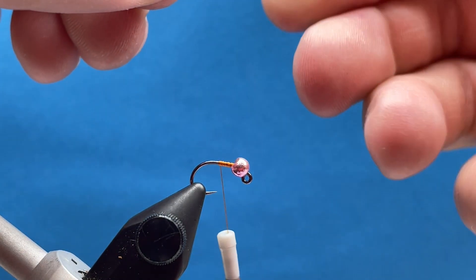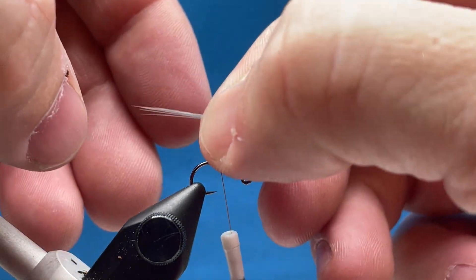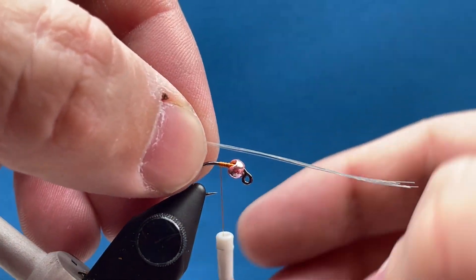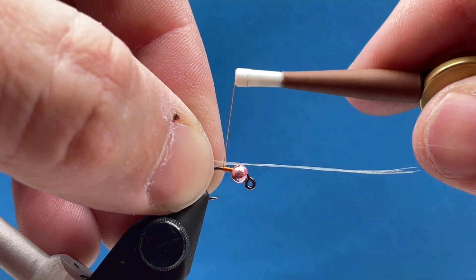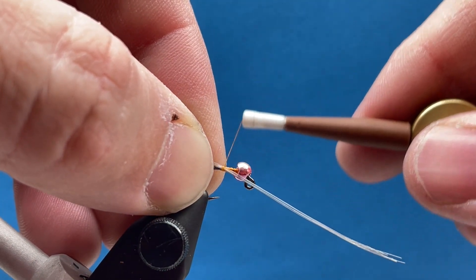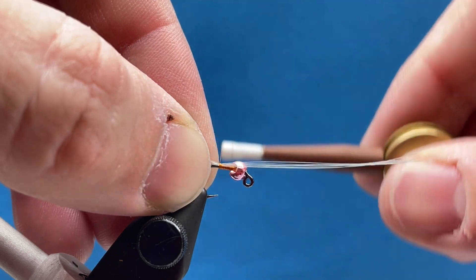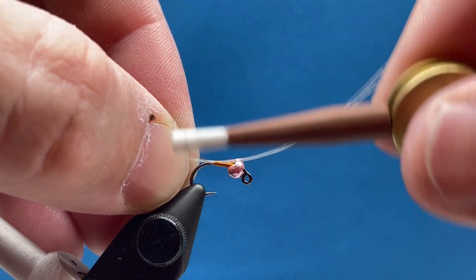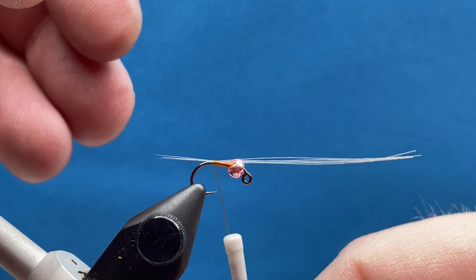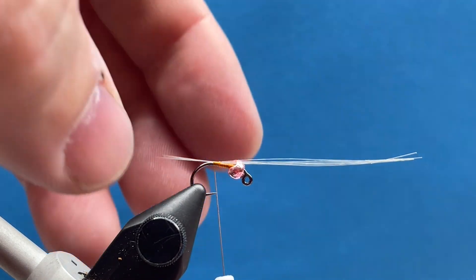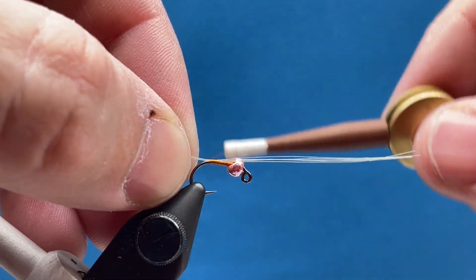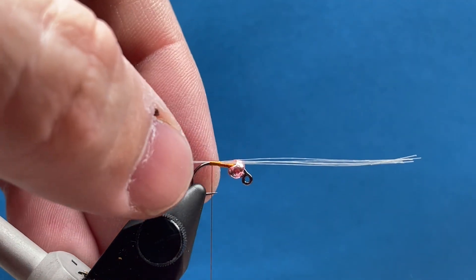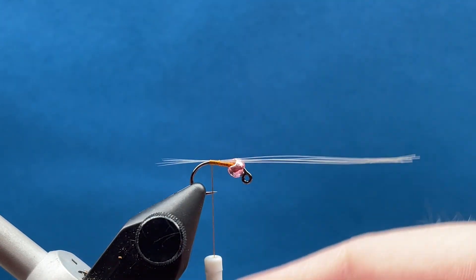We're going to tie these in right on top of the hook shank, so I'm just going to get my measurement, how long I want them. I want it to be about half the length of the hook. I try to keep these centered right on top of the hook so they don't roll around. That's about the right length, just like that. Then I'll wrap back to just before the bend in the hook. I'm not going to trim this yet, I'm going to use these to my advantage to help build the taper on this body.